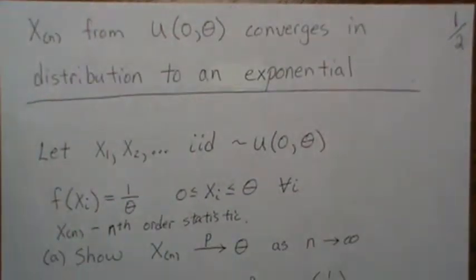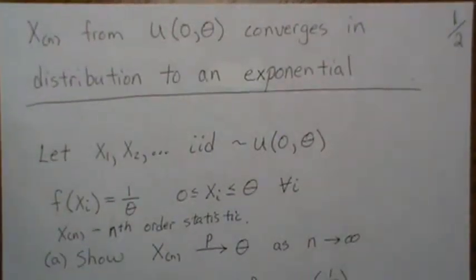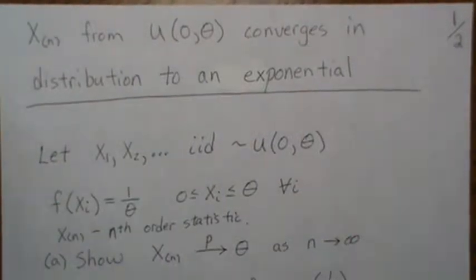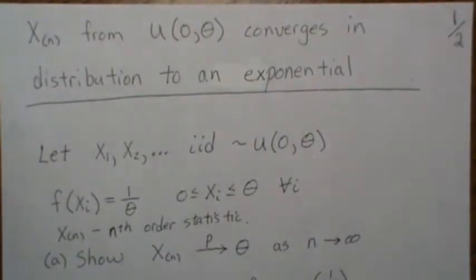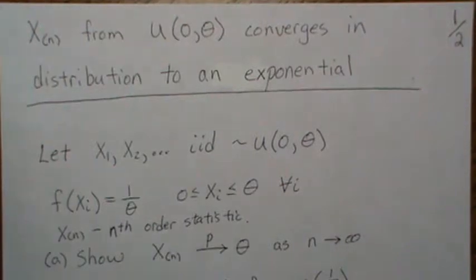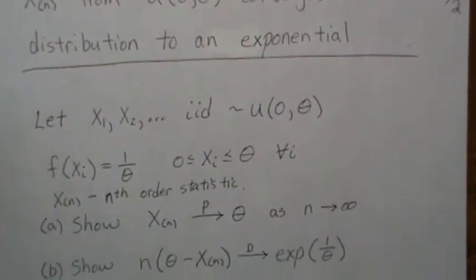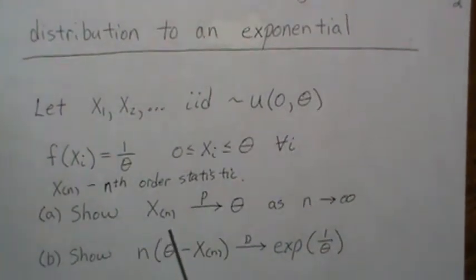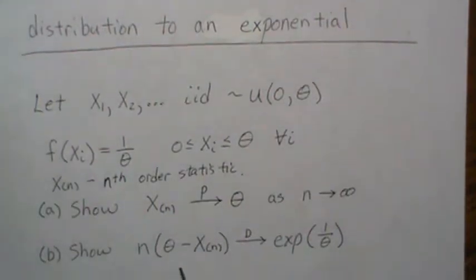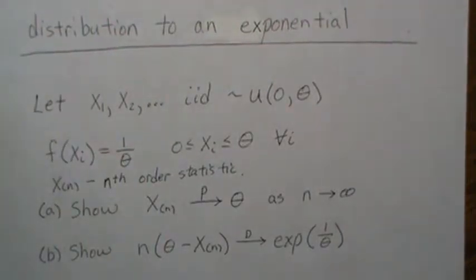Hello, in this video we're going to look at the nth order statistic from a uniform zero to theta distribution and derive some of its properties. Specifically we want to show that it converges in probability to theta and that this quantity here converges in distribution to an exponential distribution.